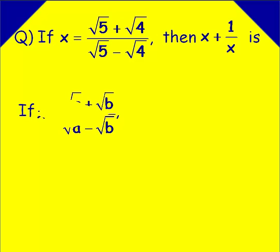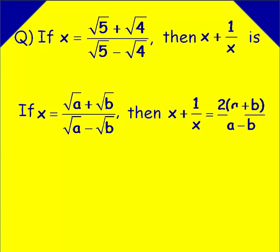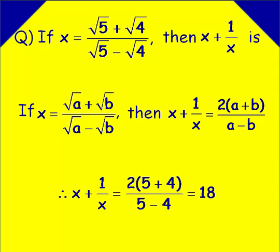Suppose x is in the form root a plus root b divided by root a minus root b, then the sum of the terms x and 1 by x is 2 into a plus b divided by a minus b. Now in our problem, a equals 5 and b equals 4. Therefore x plus 1 by x equals 2 into (5 plus 4) divided by (5 minus 4), which equals 18.